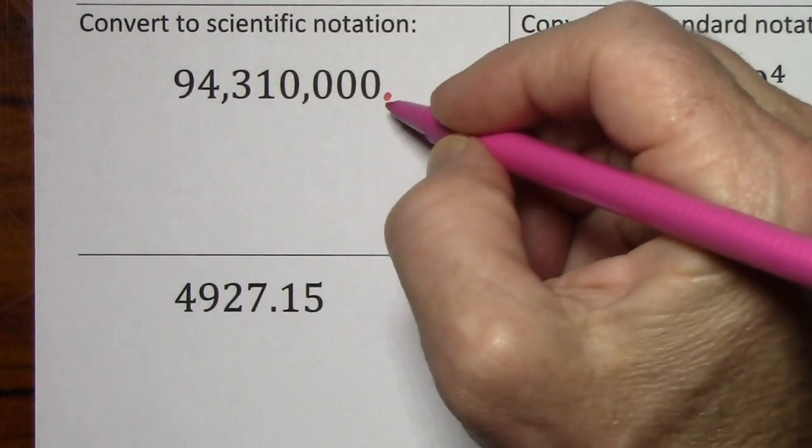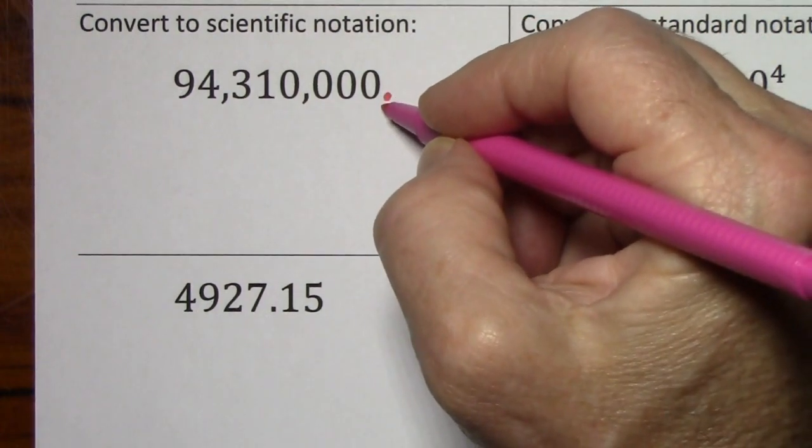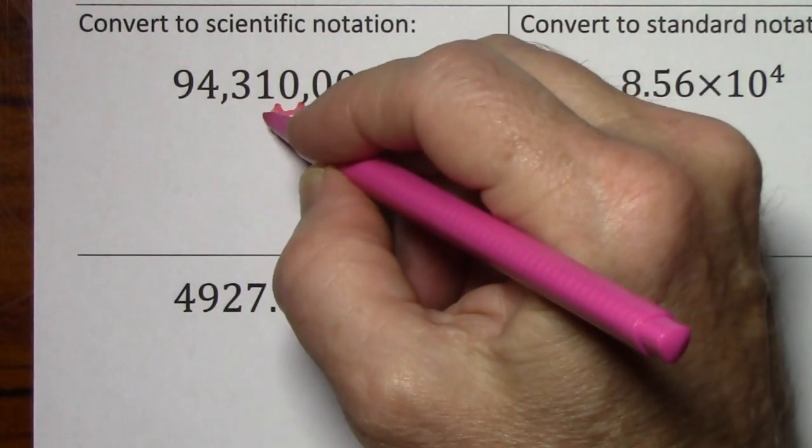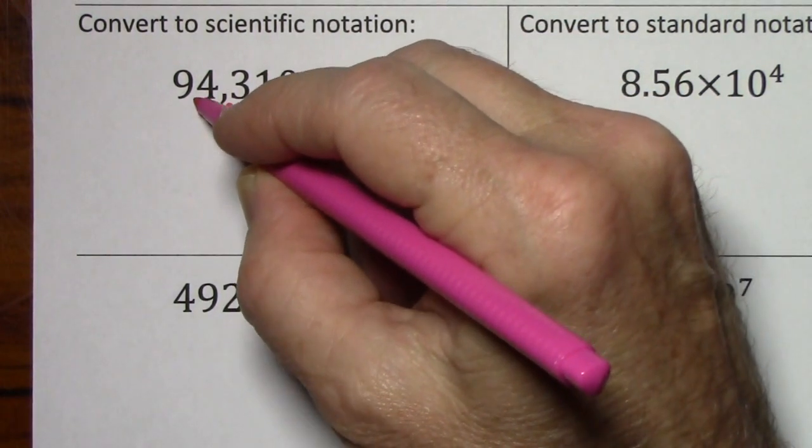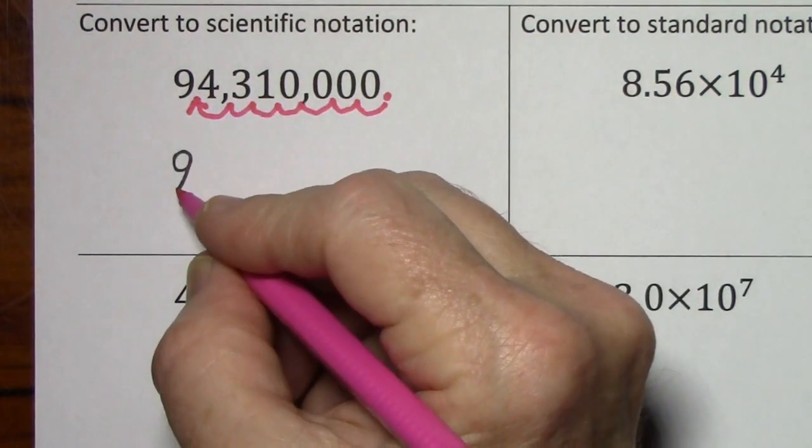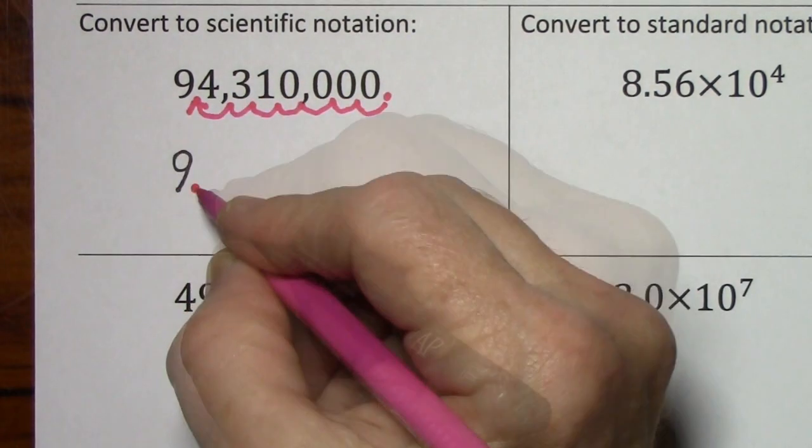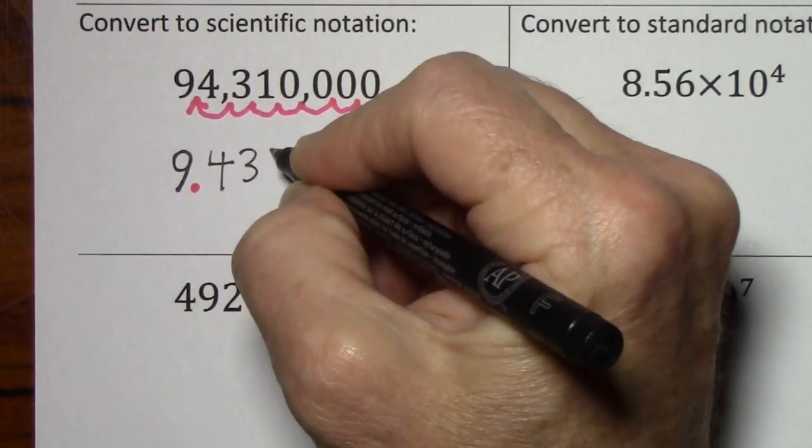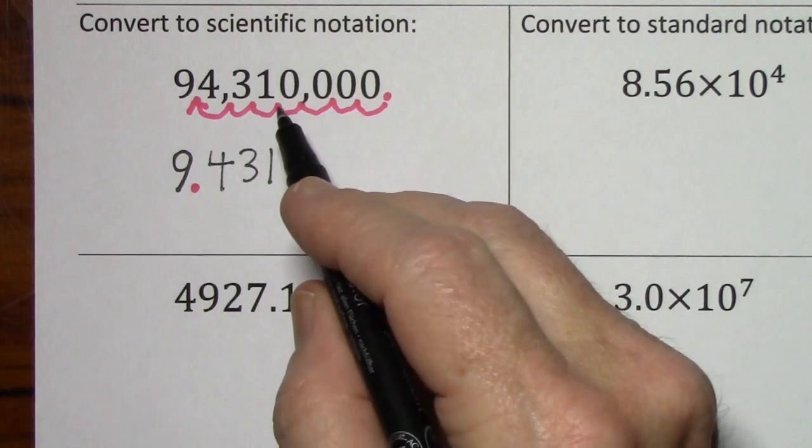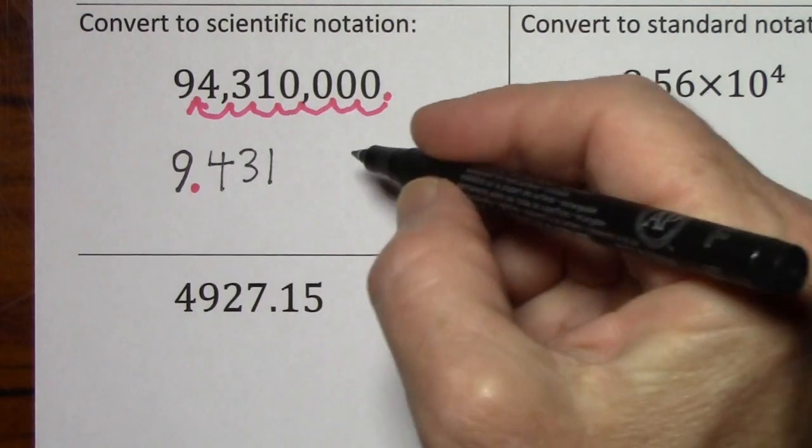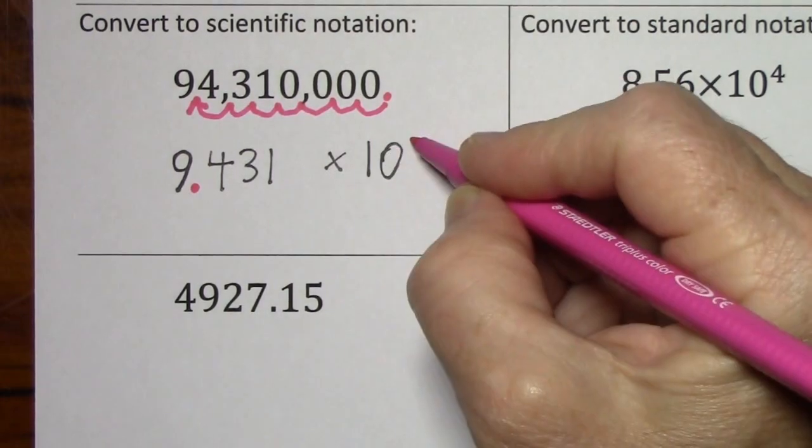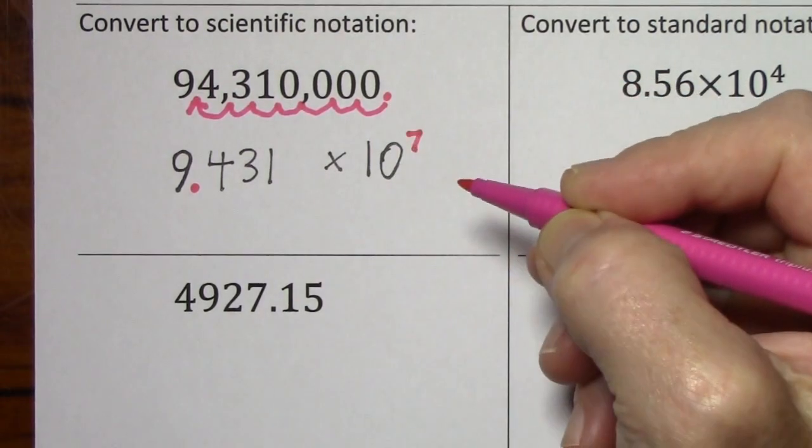And then keep up with the fact that we want to move it one, two, three, four, five, six, seven places. This will give us 9.431, and I can drop these trailing zeros times 10 to the seventh.